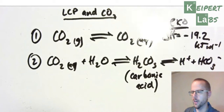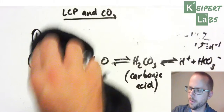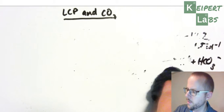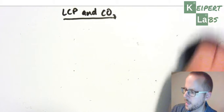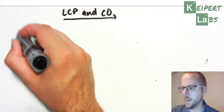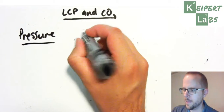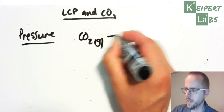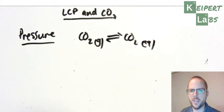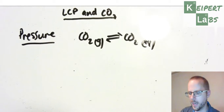There are a couple of things we can do to affect this equilibrium. The main two things we're going to focus on are temperature and pressure. Let's look at pressure first, because it's perhaps a little easier to understand, and this particularly relates to the first equilibrium — the equilibrium between carbon dioxide as a gas and dissolved, or aqueous, carbon dioxide.